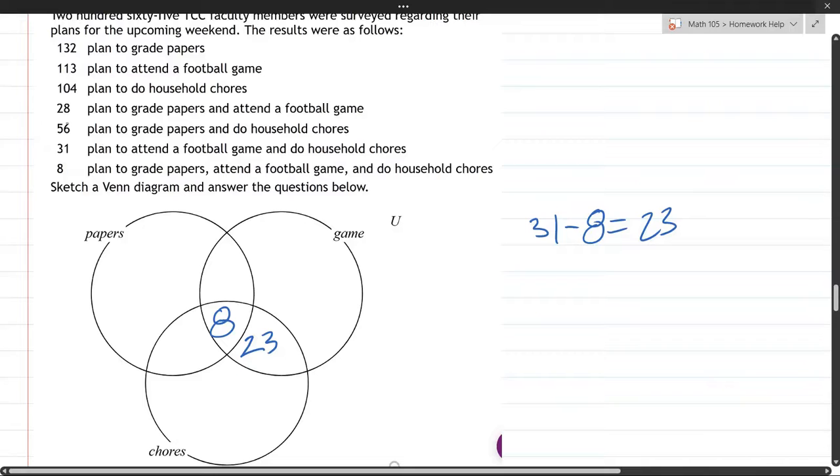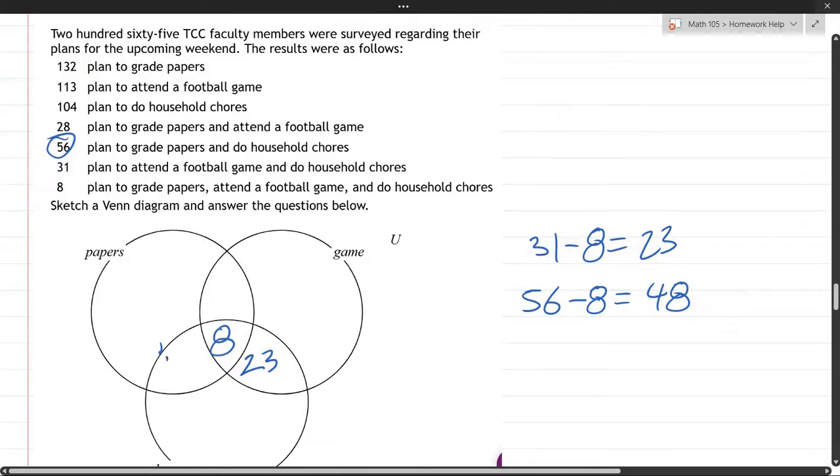We're going to do the same thing with the 56. 56 plan to grade papers and do household chores. So that's papers and chores right here. We have 56, but again, we already have eight accounted for. So we have left is 48. So there will be 48.